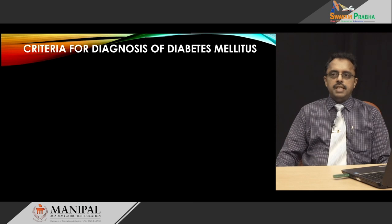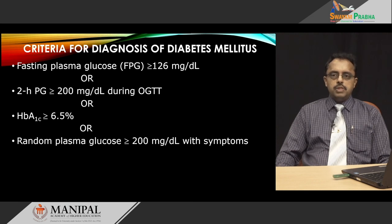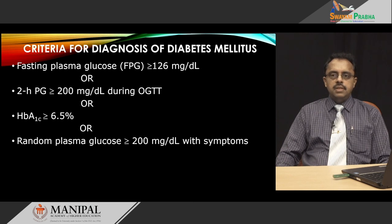The criteria for diagnosis of diabetes mellitus: if the fasting plasma glucose is equal to or more than 126 mg/dL, or if the 2-hour plasma glucose during OGTT is equal to or more than 200 mg/dL, or if HbA1c is more than 6.5 percent, or if random plasma glucose equals 200 mg/dL or more with the classic symptoms of diabetes mellitus.